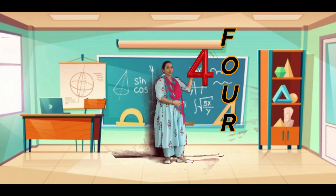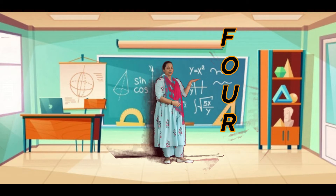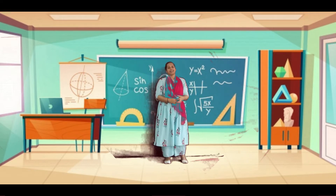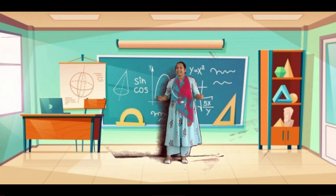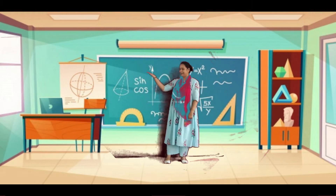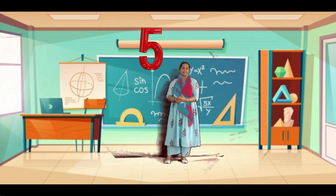Now see here, number Four. Four is spelling children — see here: F, O, U, R. Four.